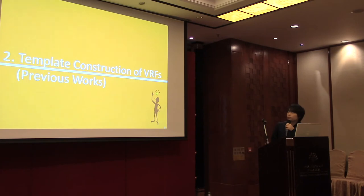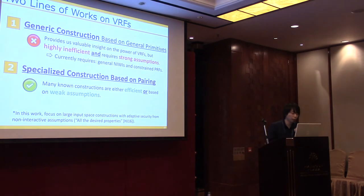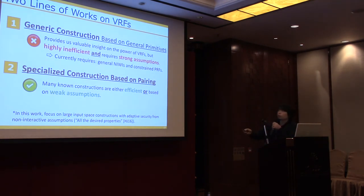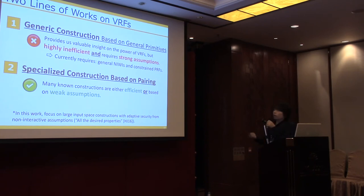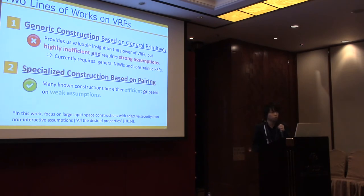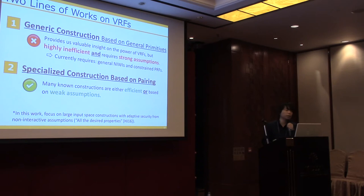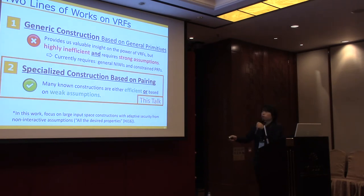There are essentially two lines of work on VRFs. The first is a generic construction based on general primitives, providing valuable intuitions on how strong VRFs are as a cryptographic primitive. We currently know that we require general non-interactive witness indistinguishable proofs and constrained PRFs to construct VRFs. However, since we don't know any efficient constructions of these primitives, VRFs constructed this way are highly inefficient and require strong assumptions. The other approach uses specialized constructions based on pairings, where many constructions are either very efficient or based on weak assumptions. This talk focuses on this line of work.